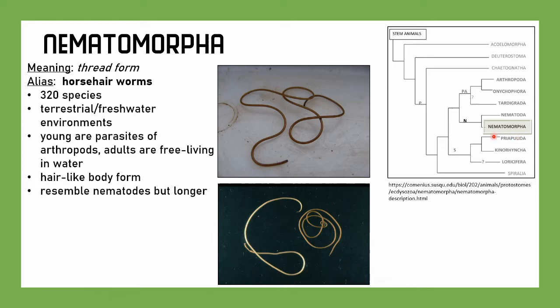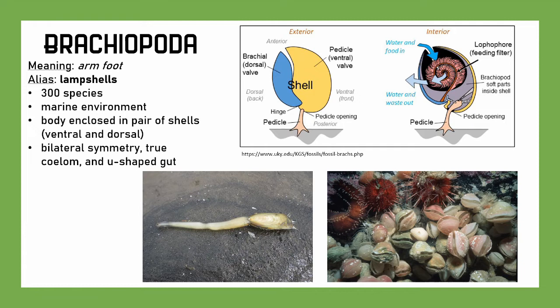We have Brachiopoda, which means 'arm foot.' These are also known as lamp shells. There are about 300 species, exclusively marine. Their body is enclosed in a pair of shells — a brachial or dorsal shell, and a pedicle or ventral shell. They have bilateral symmetry, a true coelom, and a U-shaped gut. Most of them are filter feeders.